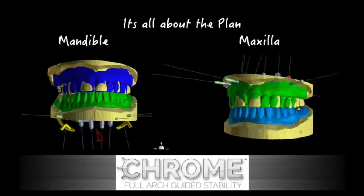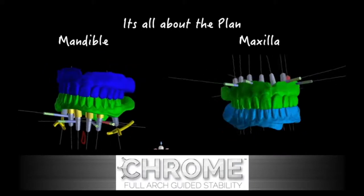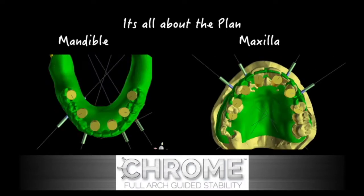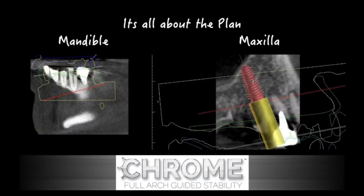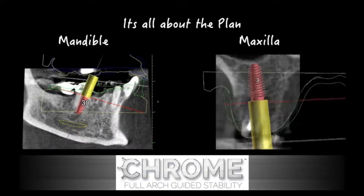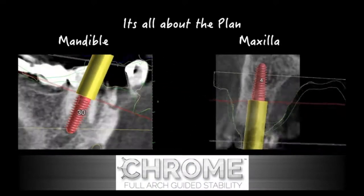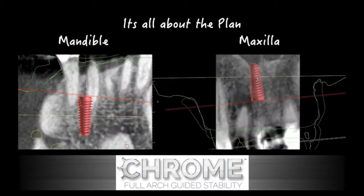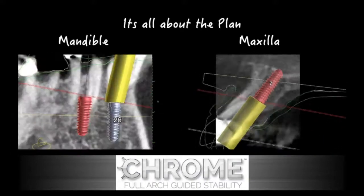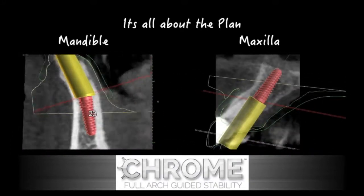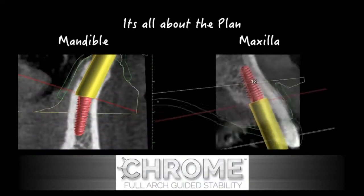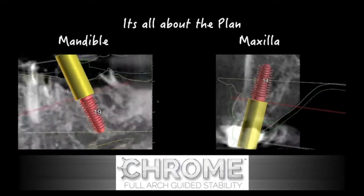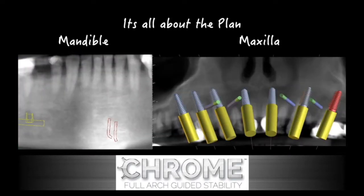Once we have the cone beam CT, we want to be able to merge the information with the existing stone casts or impressions. We then can take that data set and plan the position for each implant. We want to be able to rotate around the implant 360 degrees to make sure that we do not impinge upon any vital structures. As we visualize each implant placement, we may also discover that we will need angled abutments in order to achieve the result that we want.